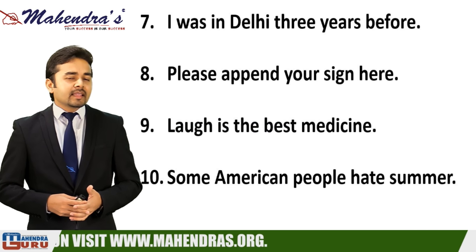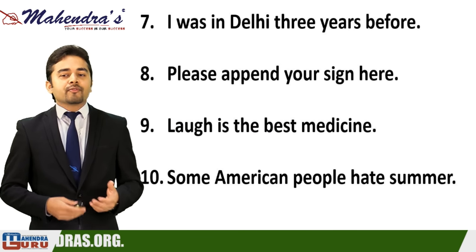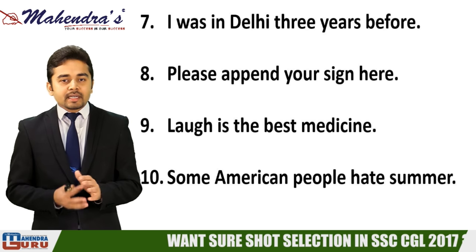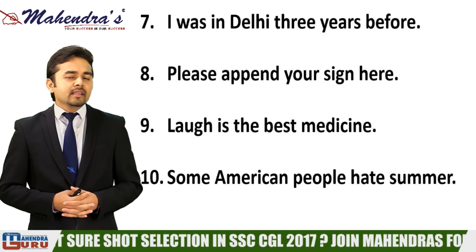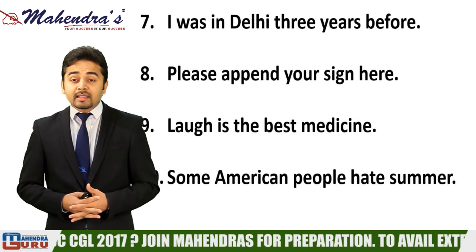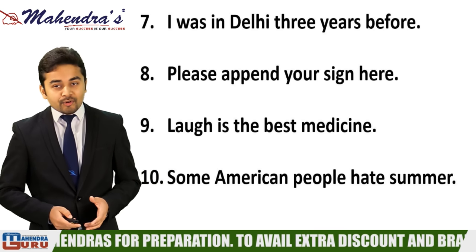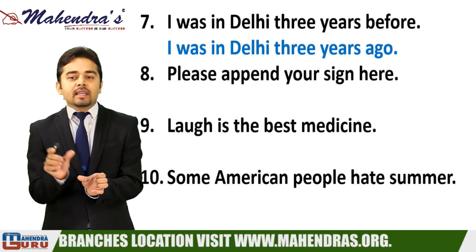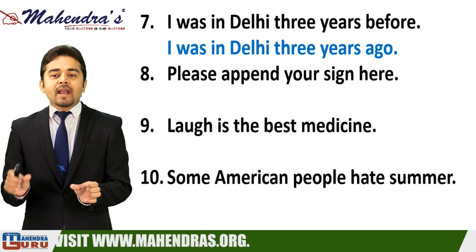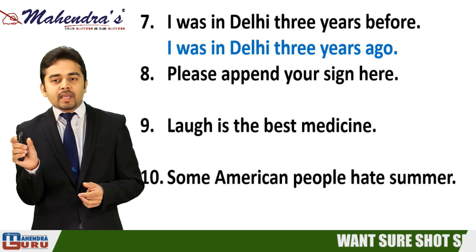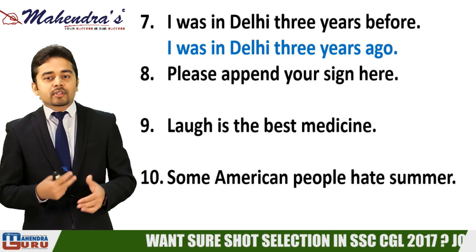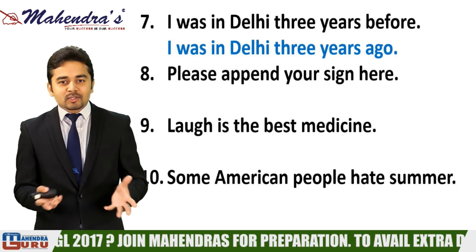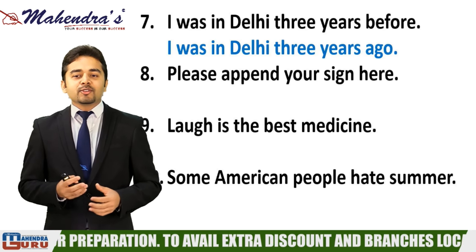Seventh sentence: 'I was in Delhi three years before.' The error is the word 'before.' After a time expression like 'three years,' you must use 'ago,' not 'before.' The correct sentence is 'I was in Delhi three years ago.' Generally people say 'three years before,' but that is wrong — use 'ago.'